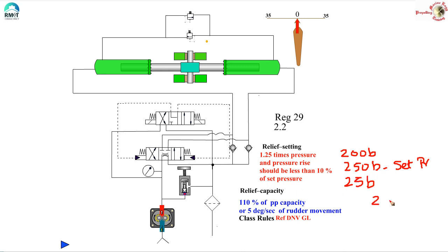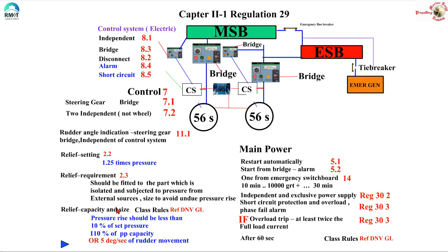Why does this accumulation of pressure happen? When the relief valve lifts up, the spring gets compressed and as it compresses the relief valve setting also increases — that is what we call accumulation of pressure. Regulation 29.2.3 states that the relief valve should be fitted to that part of the hydraulic circuit which is isolated and subjected to pressure from external sources — pressure rise — and the size should be such that it avoids undue pressure rise.